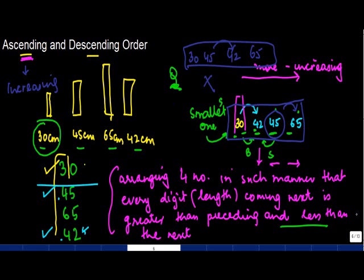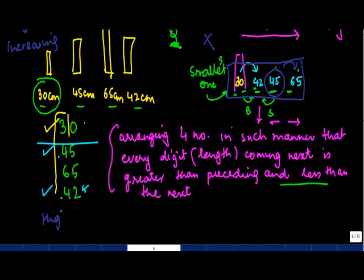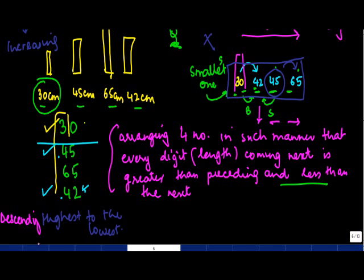On the other hand, descending order means from the highest to the lowest. So if we talk about here, we took the smallest one first, but if I have to put it in a descending order, I'll pick up the largest one first which is 65.